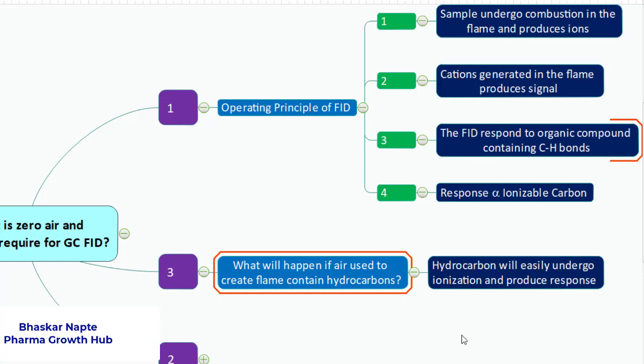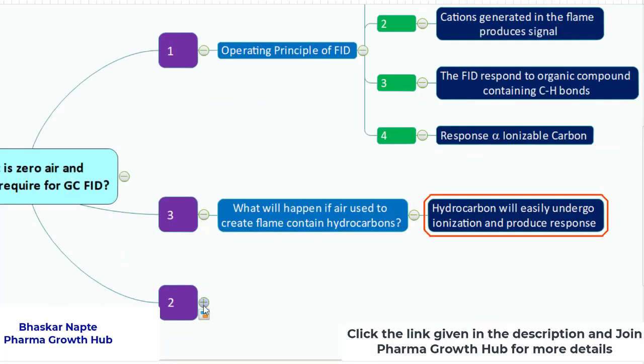So you must have understood that you must use air which should not contain hydrocarbons. Now what is the link between hydrocarbons and zero air? Zero air stands for what? There is a zero and then there is air. So air containing something zero, and what is that zero quantity? It is the hydrocarbons quantity. Means if your air does not contain hydrocarbons, that air is called zero air.